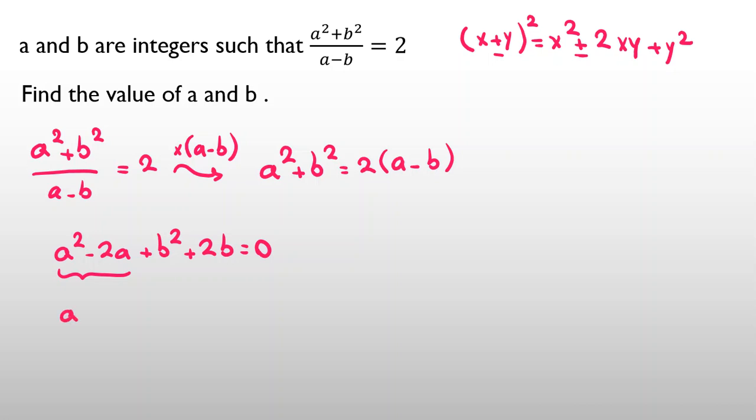For using perfect square, I add 1 to this part and subtract 1. And then also for this part, b squared plus 2b, I add 1 and subtract 1 equal to zero. This part is a minus 1 squared. You have negative 1 plus. This part is b plus 1 squared minus 1 equals zero.